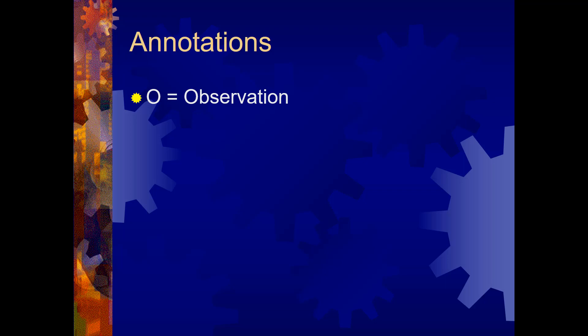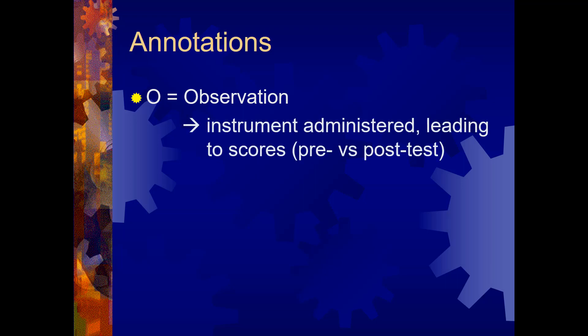First the letter O stands for observation or data in other words. For our purposes this is usually an instrument that's administered that then leads to some sort of score or scores. You'll also hear me refer to pre versus post tests in terms of these observations. That's distinguishing whether the observation was taken before the intervention or after the intervention. So pre-intervention would be the pre-test and post-intervention would be the post-test.